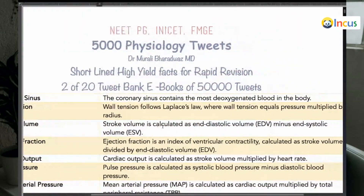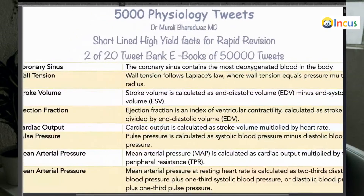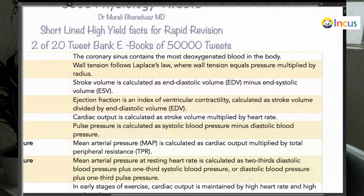Any increased diameter of the ventricle, by Laplace's law, increases wall tension, which increases myocardial oxygen demand. Most deoxygenated blood from the heart passes through the coronary sinus, which is the venous drainage of the heart. Wall tension follows Laplace's law: wall tension equals pressure multiplied by the radius of the ventricle. The more distended the chamber, the greater the radius and wall tension.